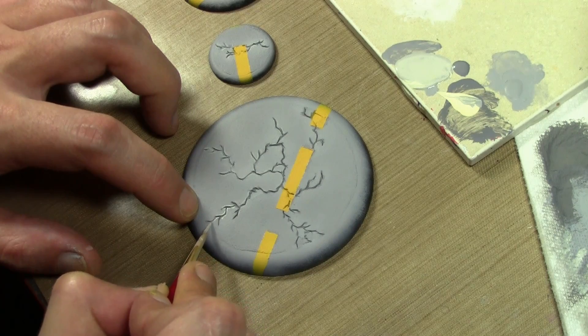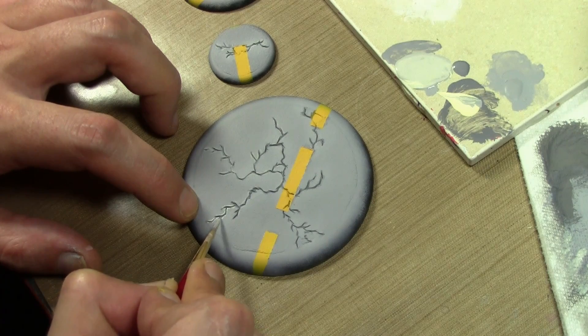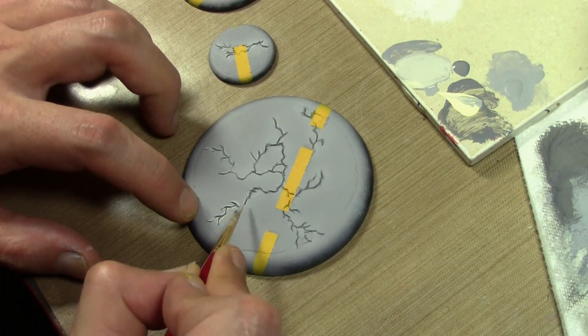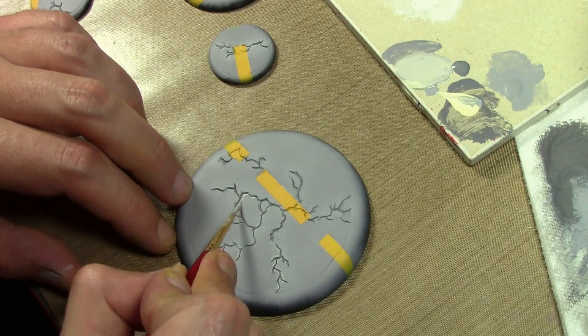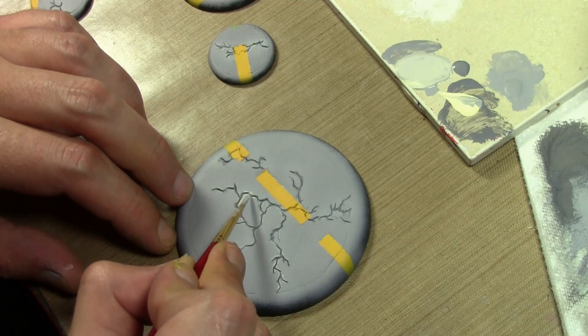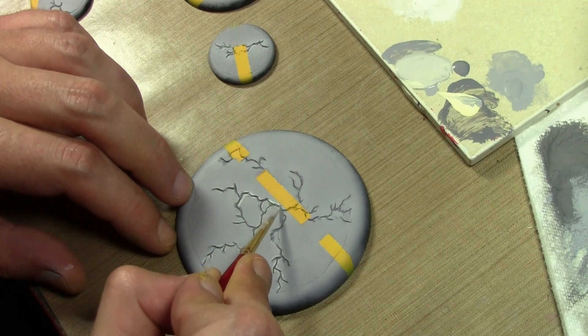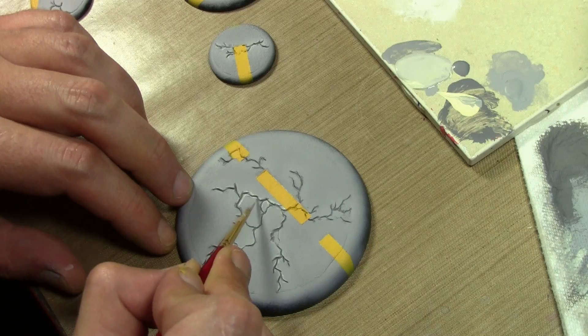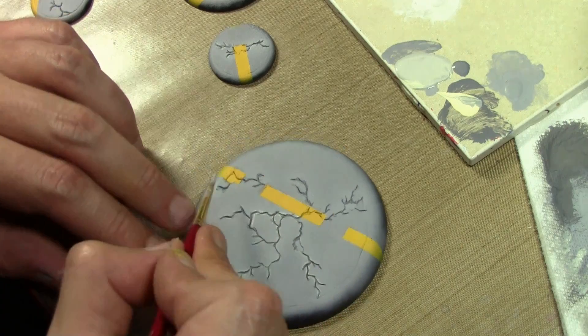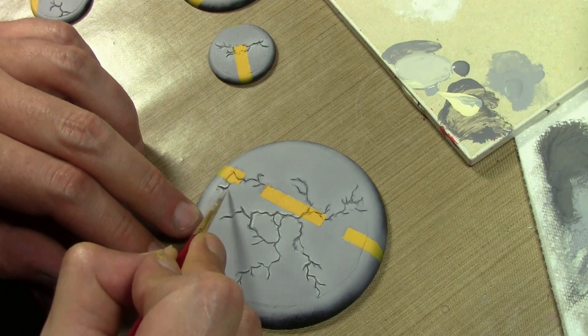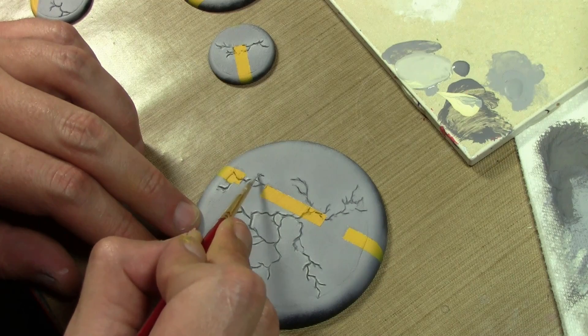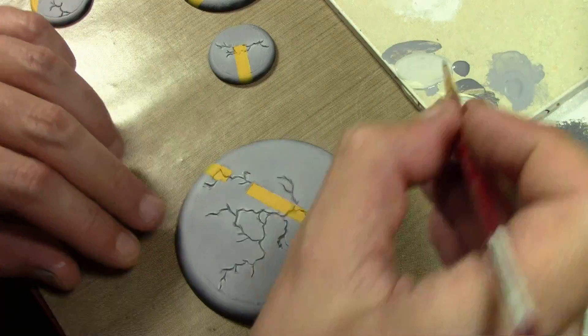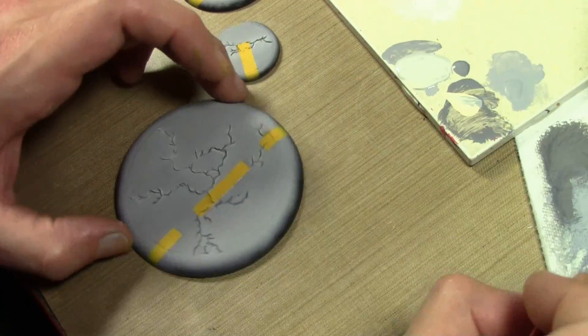I did airbrush the lane dividers with some Vallejo Yellow Ochre mixed with flat yellow. Again, you can use the stippling technique as I showed you earlier if you do not have access to an airbrush. But now I'm trying to pick out the edges of all the cracks with some Vallejo Game Color Stonewall Gray mixed with some Model Color Araki Sand. And again, this is for an anime theme, so I want some very bright, overly bright contrast on these bases.